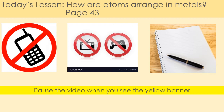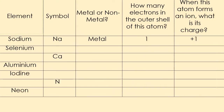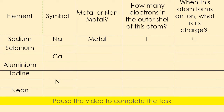We're going to start off with your Do Now task in the booklet. You have a table to complete: the element symbol, whether it's a metal or a non-metal, how many electrons are in the outer shell, and when it forms an ion, what is its charge. Please pause the video now to complete the task, and when you are done you can unpause and we will go through the answers.